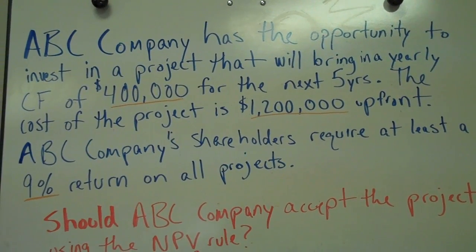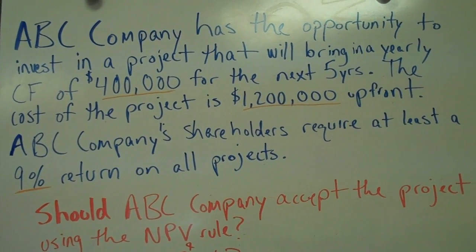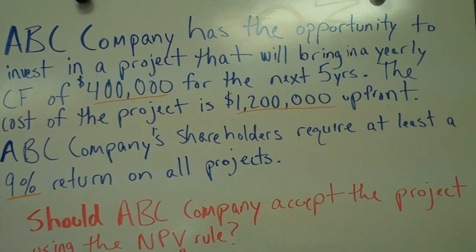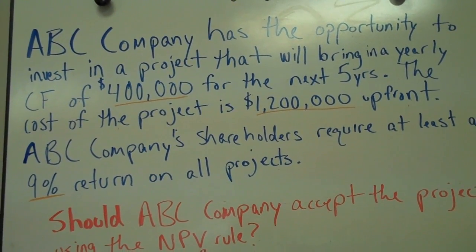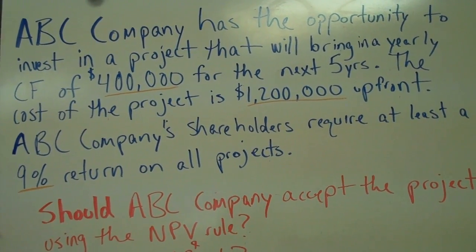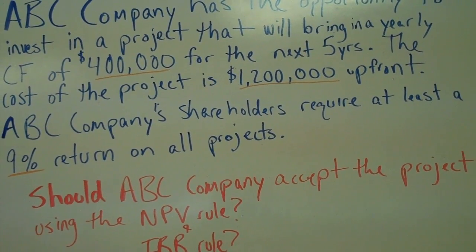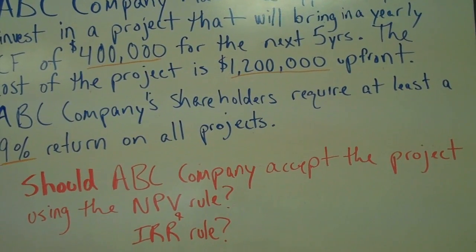For this question, ABC Company has the opportunity to invest in a project that will bring in a yearly cash flow of $400,000 for the next five years. The cost of the project is $1,200,000 up front.